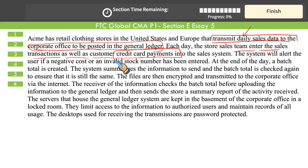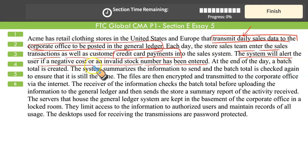When reading the case scenario, something that should alert you is a weakness to identify. The system will alert users if a negative cost or an invalid stock number has been entered. Cost cannot be negative — either there is a cost or there is no cost. The system identifies if some incorrect input is being made. That's good.